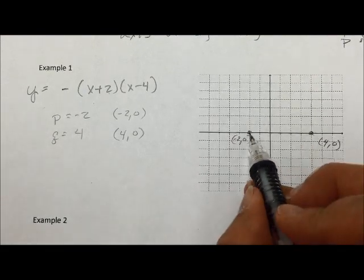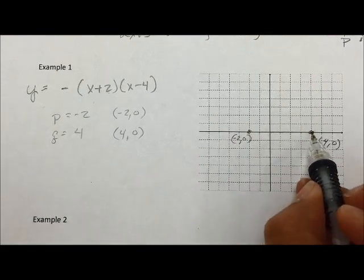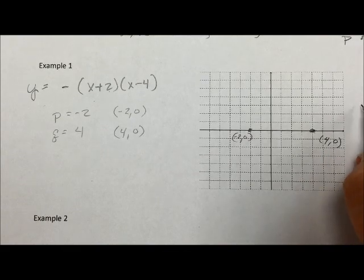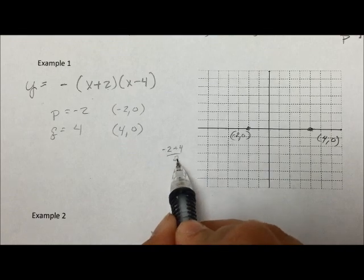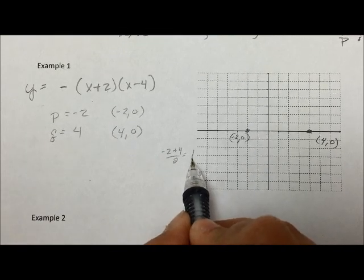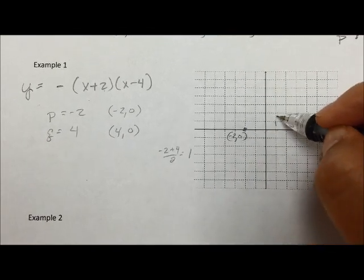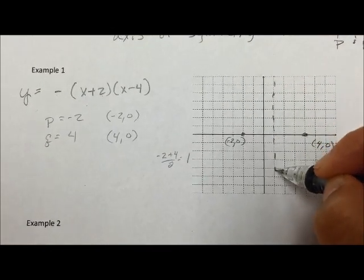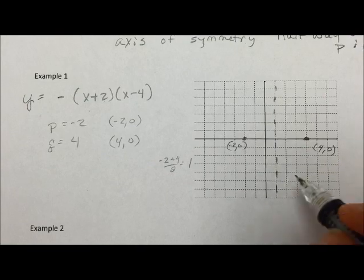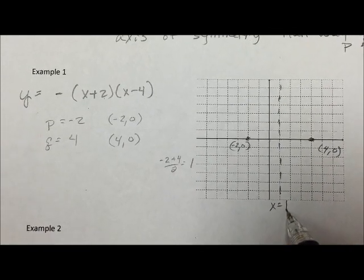And the axis of symmetry is going to be halfway between these two intercepts. So it's going to be halfway between negative 2 and 4. So negative 2 plus 4 divided by 2 is 1. So I know that my axis of symmetry is going to be along this line of x equals 1. So x equals 1 is the axis of symmetry.